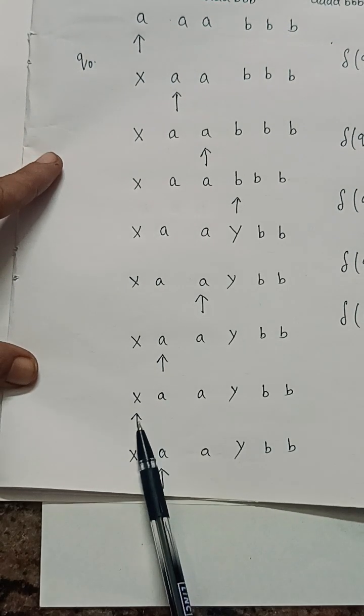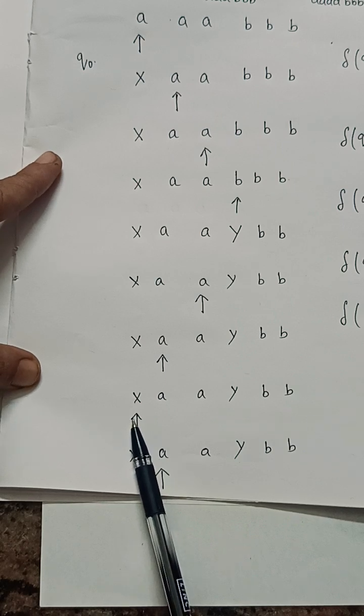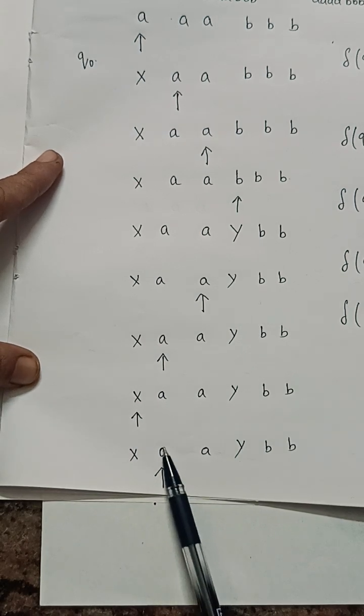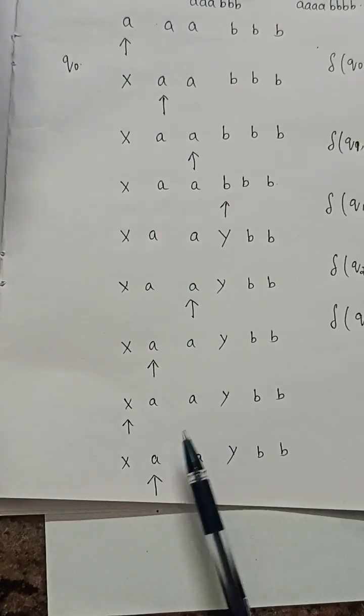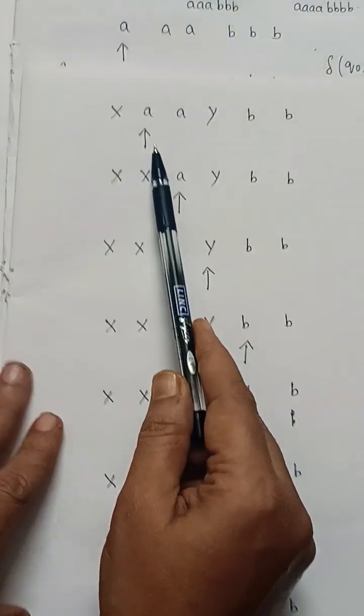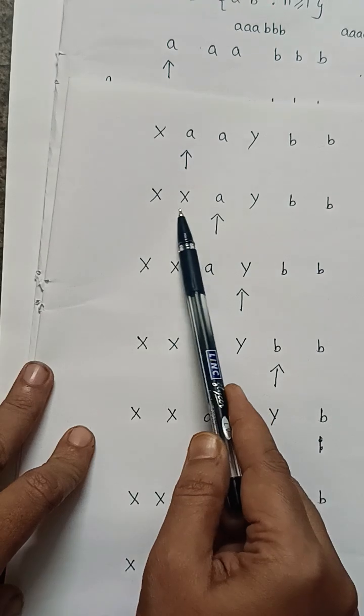So, whenever I get x that says that that is the end of the string, then I should move to right. So, I got the second symbol a. Replace that a with x. So, whenever I reach the variable a, then replace that variable with x and move to right.